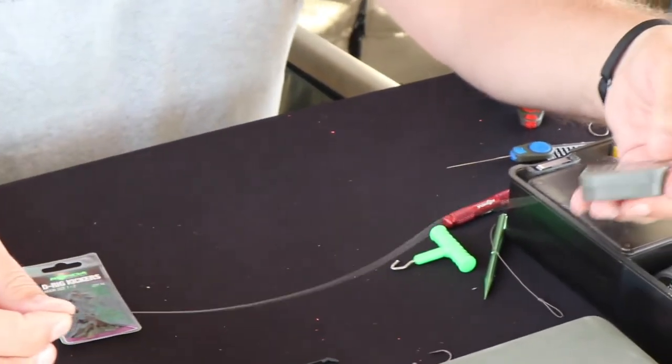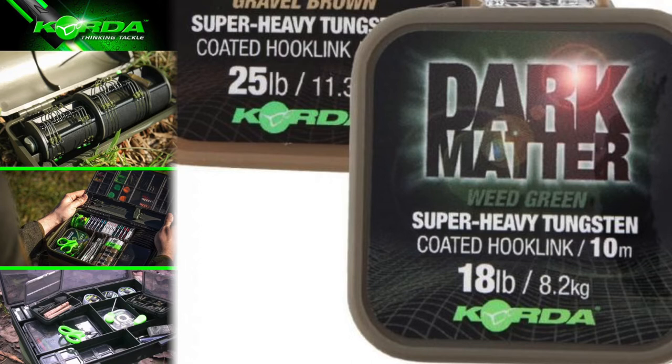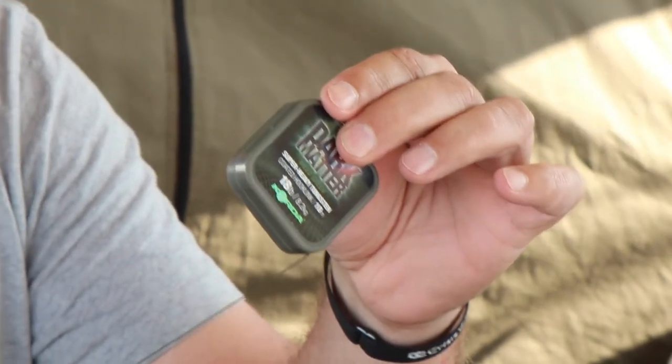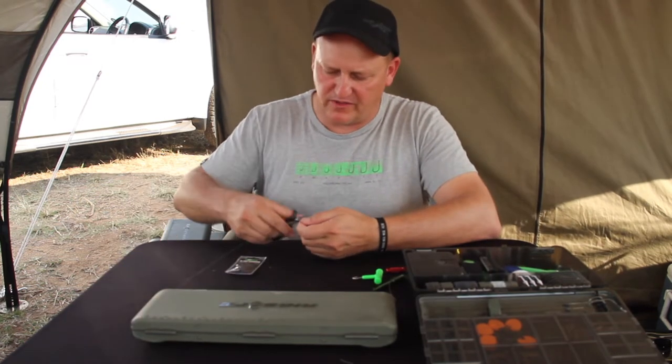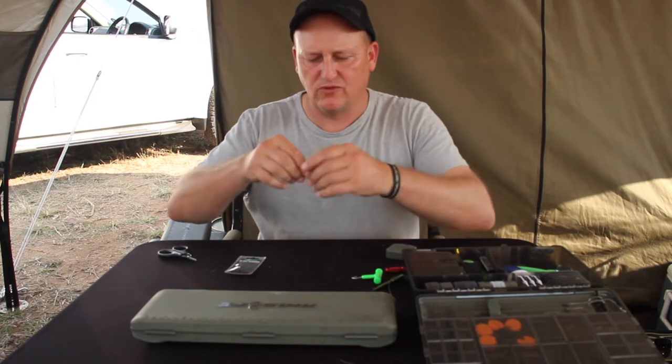Again I'm going to use the dark matter super heavy tungsten coated braid by Korda. I select a length that's just over 30 centimeters long. I cut it off.